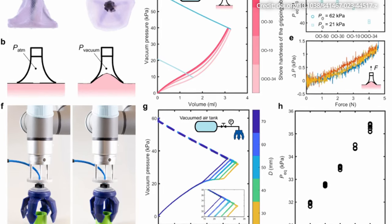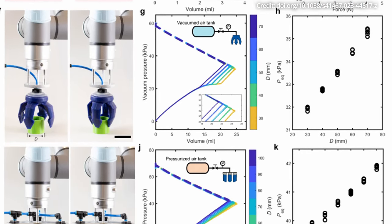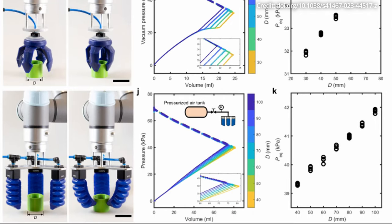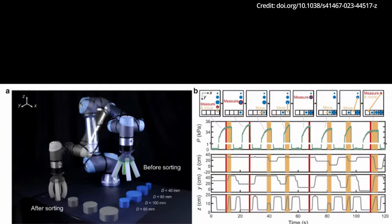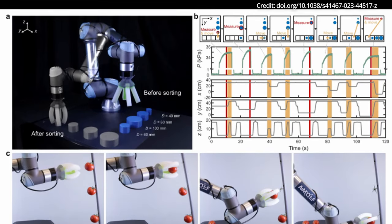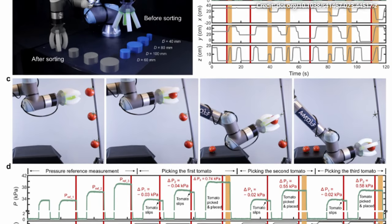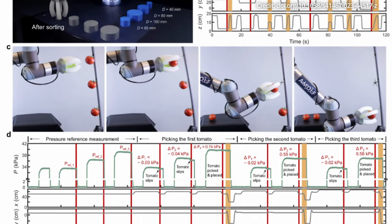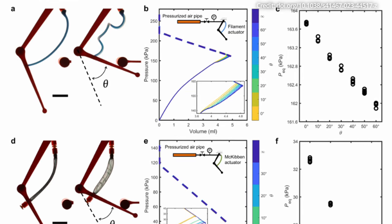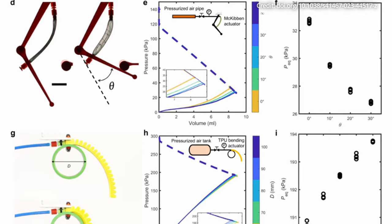One of the most significant advantages of this new method is its compatibility with existing soft robots, offering a retrofit solution that bypasses the challenges associated with integrating traditional sensors. This plug-and-play system not only simplifies the design and operation of soft robots but also makes them more accessible for a wide range of applications, from food processing to sensitive archaeological excavations. As the technology evolves, the ambition is to enable robots to make even more nuanced decisions based on a broader range of detected properties, such as weight or texture, expanding the frontier of what robots can achieve and paving the way for more humane and intuitive interactions between machines and the natural world.